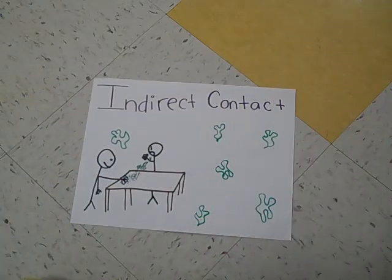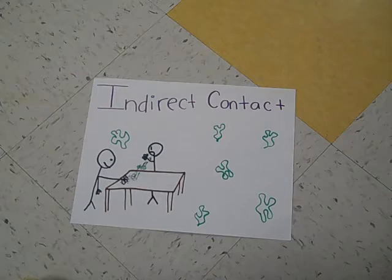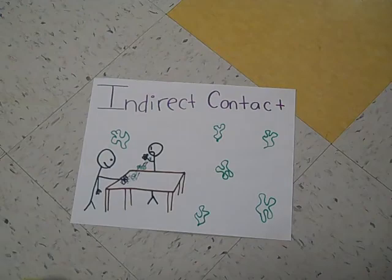Indirect contact is when there is no human-to-human contact, but it is spread from either vectors or contaminated surfaces. So if someone touched a doorknob while sick or infected, and someone non-infected touched the same thing, that would be indirect contact. An example of a disease spread from indirect contact is influenza.